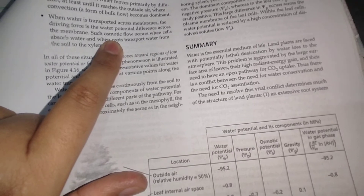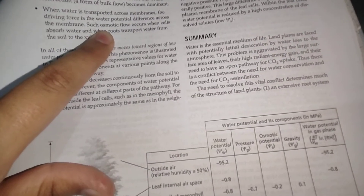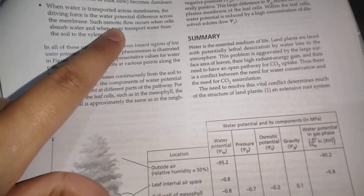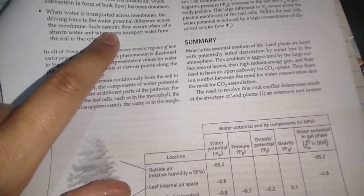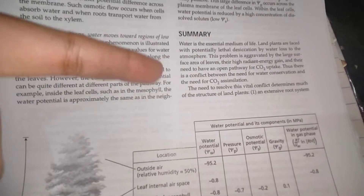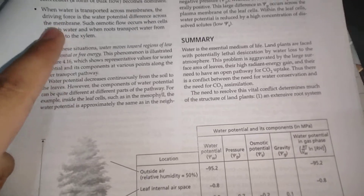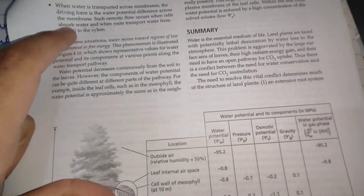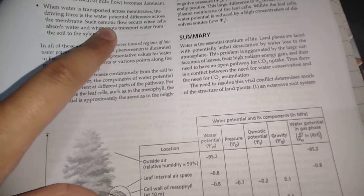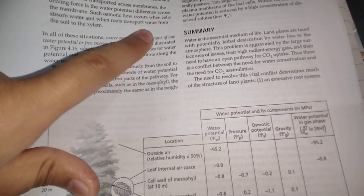Both diffusion and osmosis involve movement of water from higher potential to lower potential, but with one key difference: diffusion can occur by any mechanism, whereas osmosis occurs only when a membrane is present. If water moves from one part to another through a membrane, that is osmosis; without a membrane, it is diffusion. Osmotic flow occurs when cells absorb water and when roots transport water from soil to the xylem.